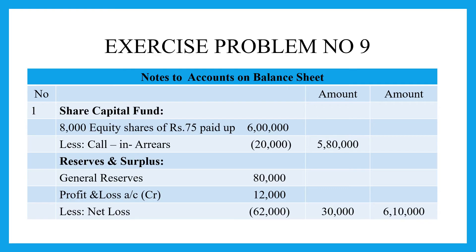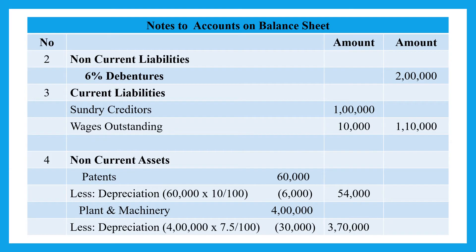Because we have a loss, reserves and surplus is reduced to Rs. 30,000 less, giving total shareholders fund of Rs. 6,10,000. Working note number two is non-current liabilities. The debenture value is Rs. 2 lakh rupees, which forms the non-current liabilities.